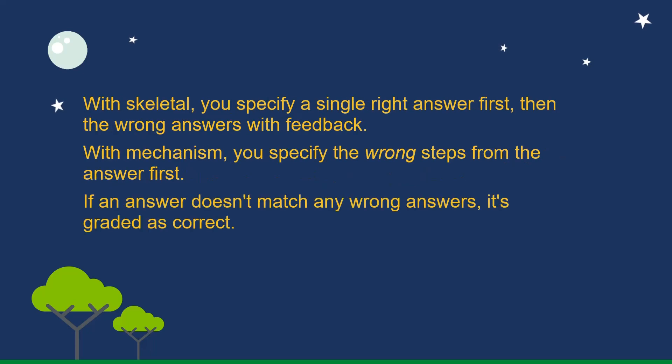With Skeletal, you specify a single right answer first, then the wrong answers with feedback. With Mechanism, you specify the wrong steps from the answer first. If an answer doesn't match any wrong answers, it's graded as correct.